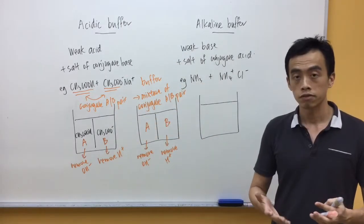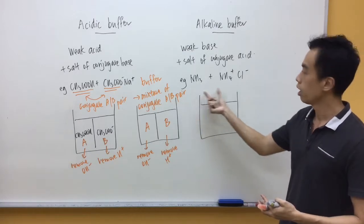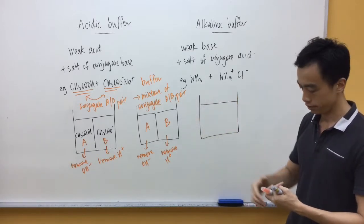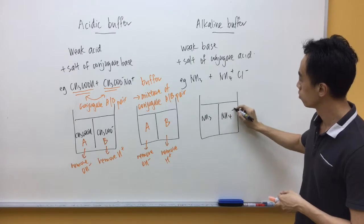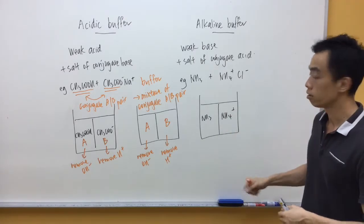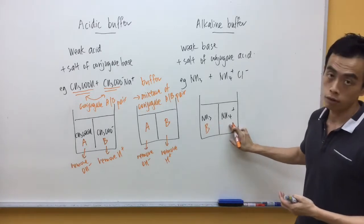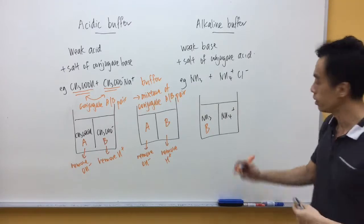Similarly, for an alkaline buffer, the idea is the same. Inside this alkaline buffer, you have NH3 and NH4+Cl-. Inside this buffer, I have an acid and a base. The base, obviously, is ammonia. NH4+ functions as the acid because it's the conjugate acid of this base.